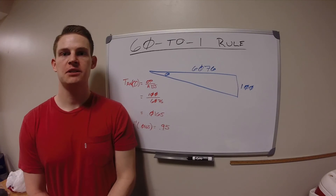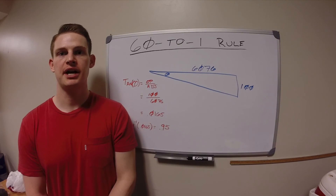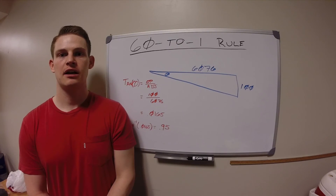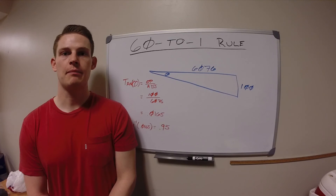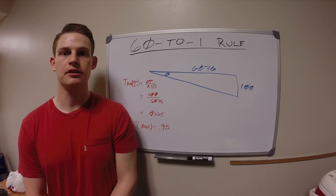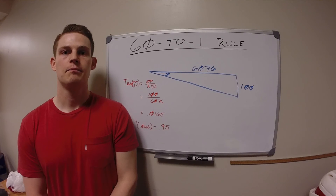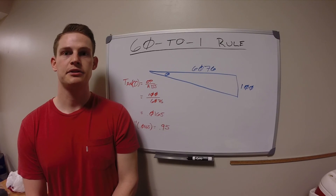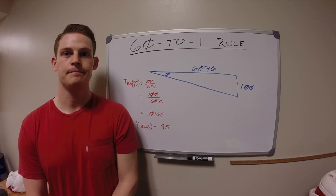If I accidentally missed my descent point because the controller hadn't asked me to descend yet and I'd forgotten to request it, I would simply take my altitude to lose divided by my miles in which to lose it, and that gives me the necessary pitch nose-low angle in order to be at the new altitude in time.